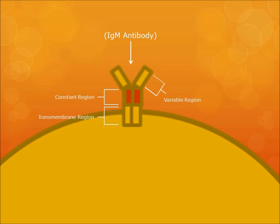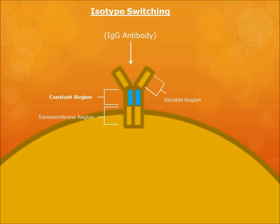As the infection progresses, however, antibodies and the BCRs become better equipped to find the pathogen. During this process, activation-induced cytidine deaminase, or AID, helps produce these better antibodies. This is known as isotype switching. The only part that changes during this process is the constant region of the antibody and BCR, which allows for better binding to the specific pathogen.